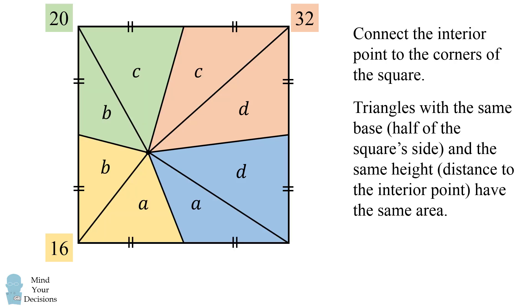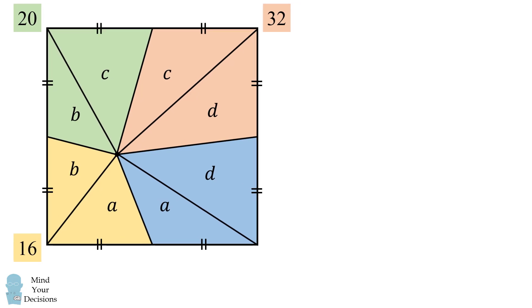Now, how can we solve for the unknown area? Well, let's take these variables with the given information. A plus B is equal to 16, B plus C is equal to 20, and C plus D is equal to 32, and we want to solve for A plus D. How can we do that?